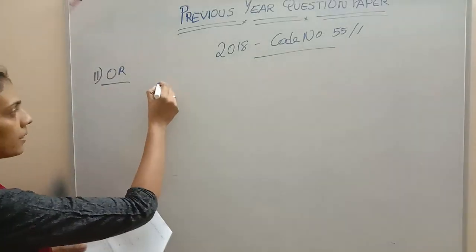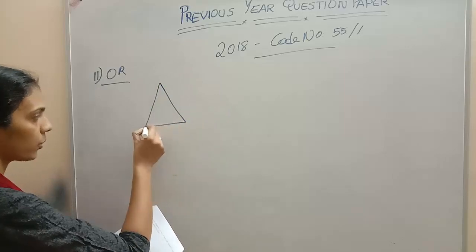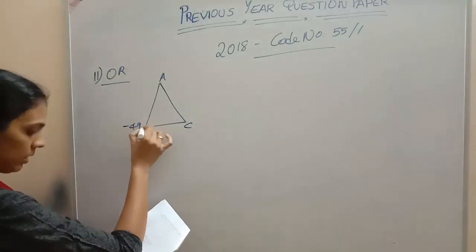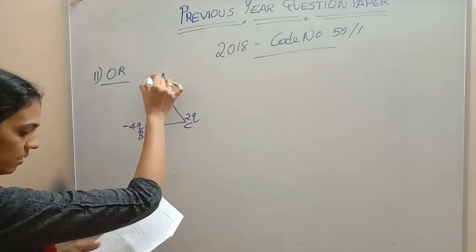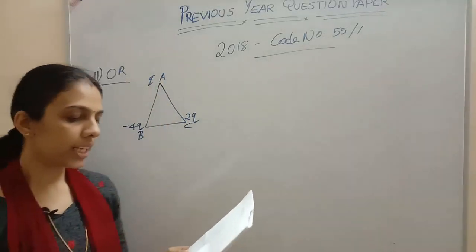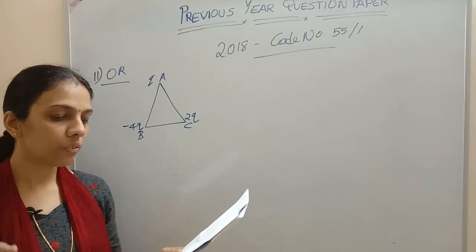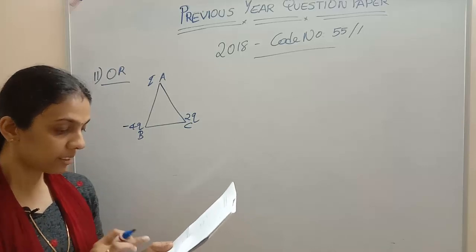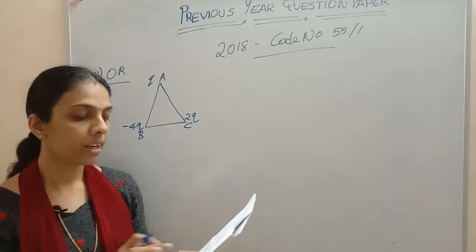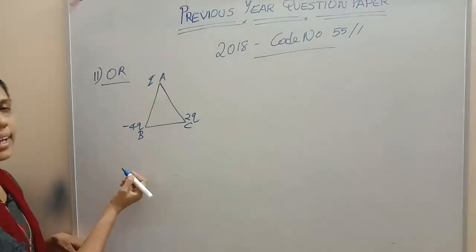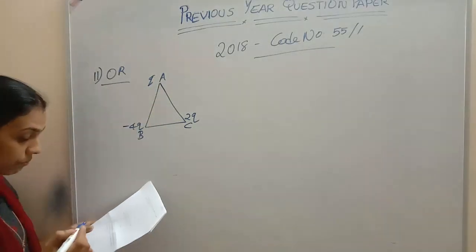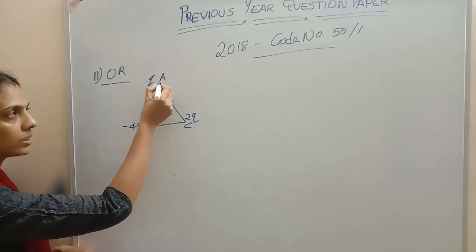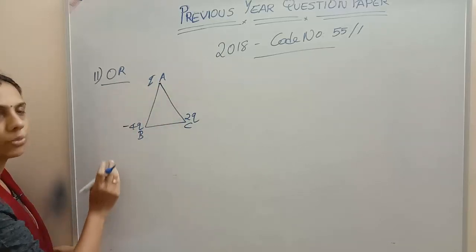Here, this is an equilateral triangle with vertices A, B, C. Here minus 4Q, and this is 2Q, and this is Q. We should obtain the expression for the magnitude of the resultant electric force acting on charge Q. 2Q will be acting a force on Q, and minus 4Q will be acting a force on Q.